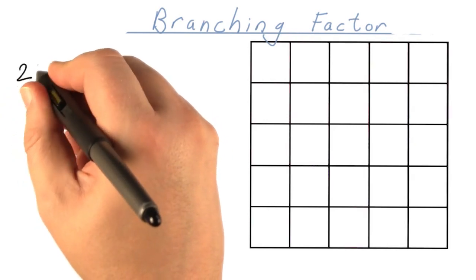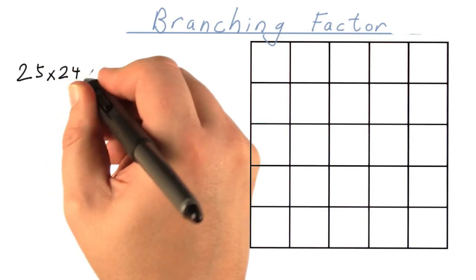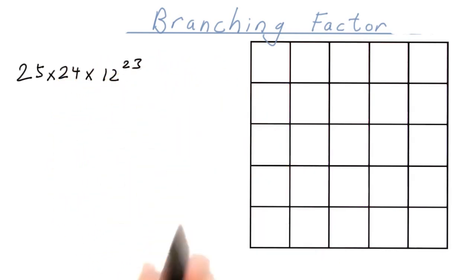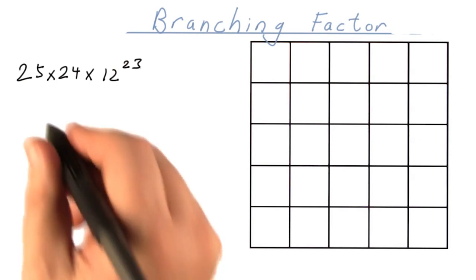In worst case, we can expect 25 times 24 times 12 to the 23rd end nodes in our game tree. Shelly, how many is that? More than 10 to the 27th power.